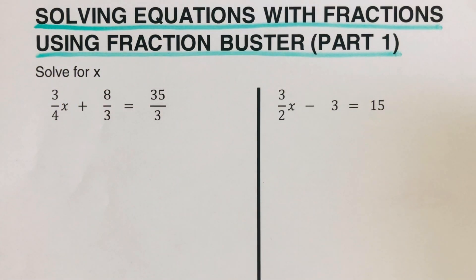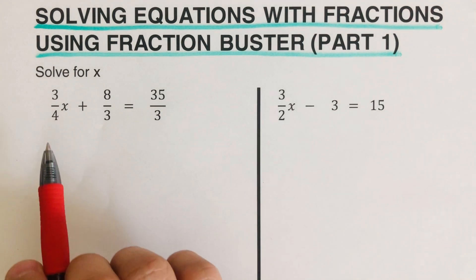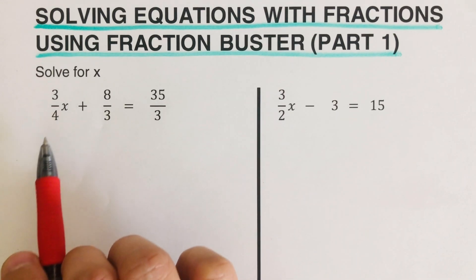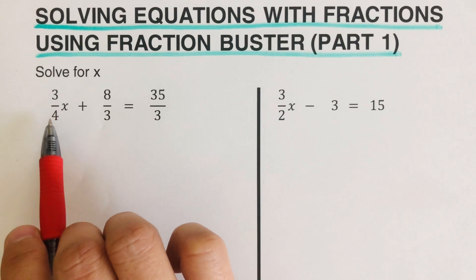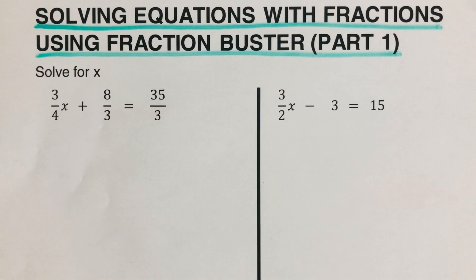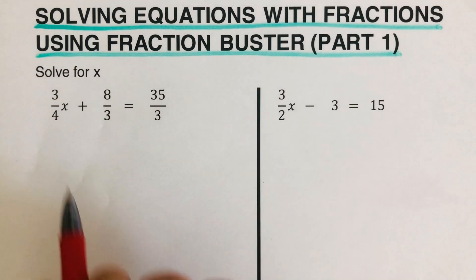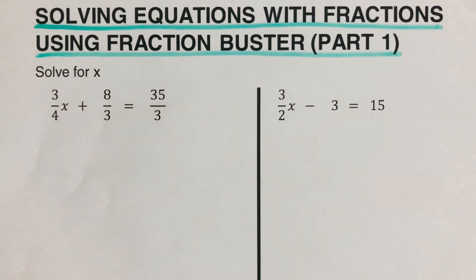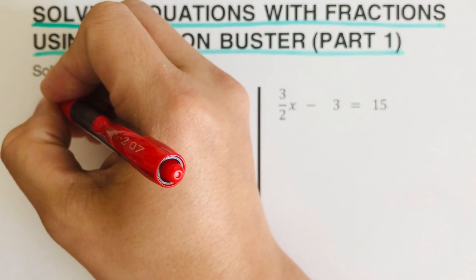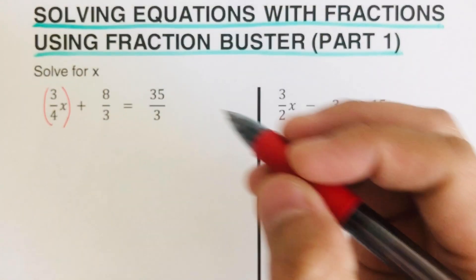The first thing we are going to do is determine the LCM, or Least Common Multiple. The LCM is a number such that if we divide it by the denominators it gives a whole number. For example, we have denominators 4, 3, and 3 — the LCM is 12, because 12 divided by 4 is 3 and 12 divided by 3 is 4. So we are going to multiply all terms by 12.